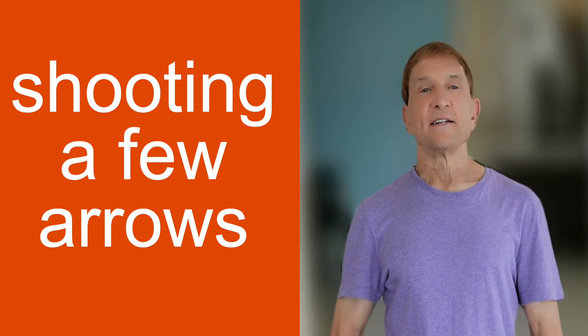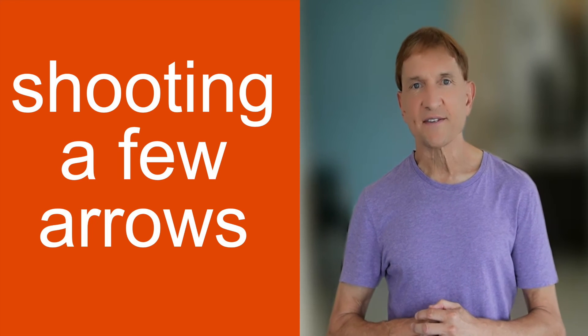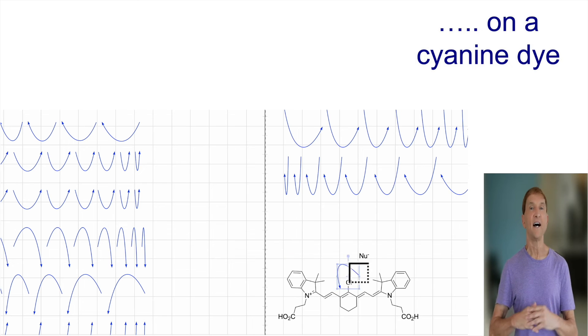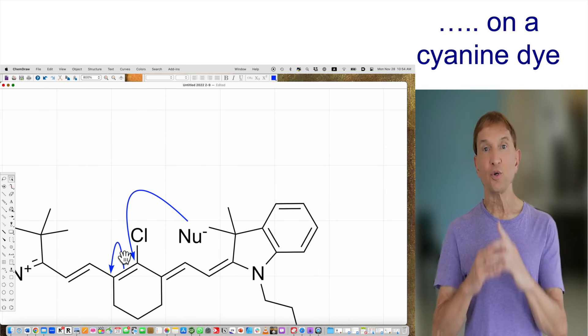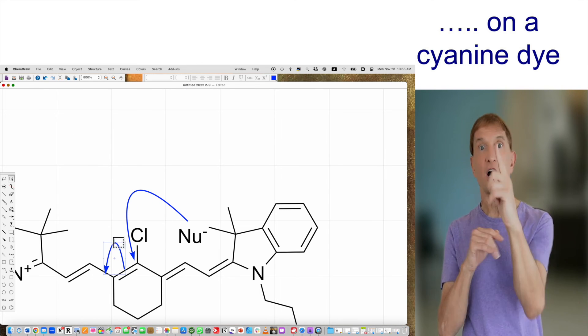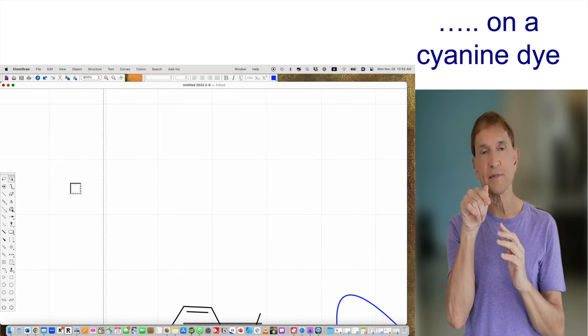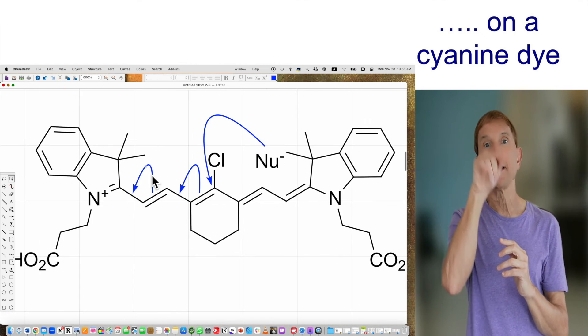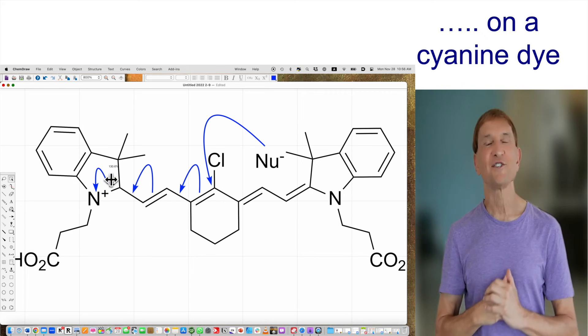Let's practice again. Let's shoot a few curly arrows, and I want to do this on a sigmatropic die. I like sigmatropic dies. Let's figure out how a nucleophilic attack on that mesocarbon with the chlorine would proceed. Nucleophile comes in. Let's push the curly arrows towards the positive charge. It works like a charm.